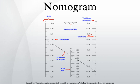Nomograms use a parallel coordinate system invented by d'Ocagne rather than standard Cartesian coordinates. A nomogram consists of a set of n scales, one for each variable in an equation. Knowing the values of n-1 variables, the value of the unknown variable can be found, or by fixing the values of some variables, the relationship between the unfixed ones can be studied. The result is obtained by laying a straight edge to cross the known values on the scales and reading the unknown value from where it crosses the scale for that variable.